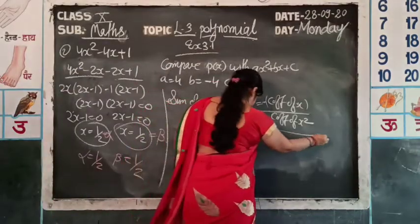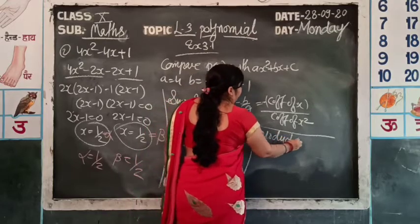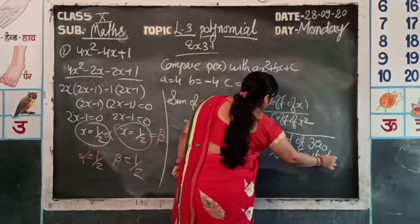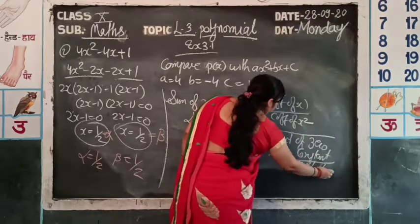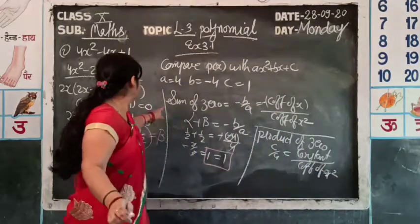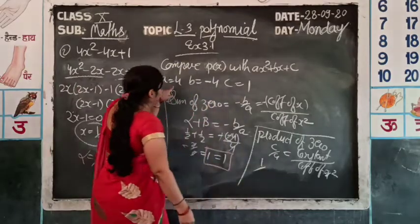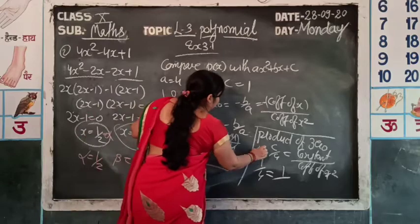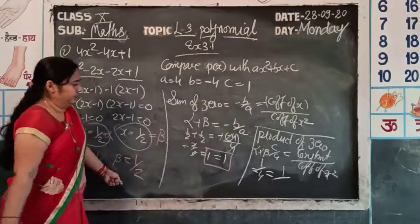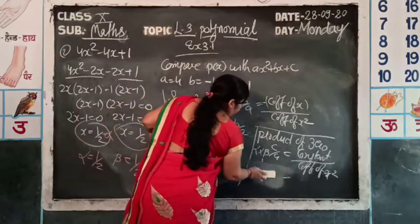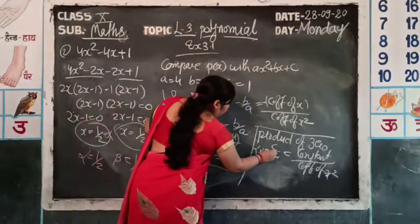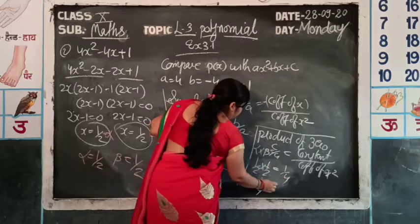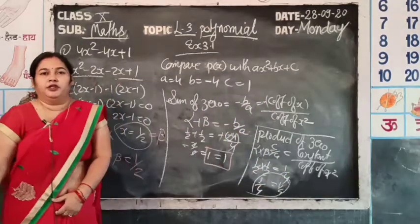Product of zeros: alpha × beta = 1/2 × 1/2 = 1/4. And C/A = 1/4. Constant is 1, A is 4, so 1/4. Both are 1/4 — same answer, hence verified.